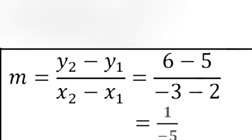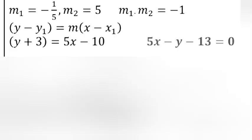Part ii: Find the equation of the line passing through (2, -3) and perpendicular to line L. Answer: m1 = -1/5, m2 = 5, m1 × m2 = -1. y - y1 = m(x - x1), y + 3 = 5x - 10, 5x - y - 13 = 0.